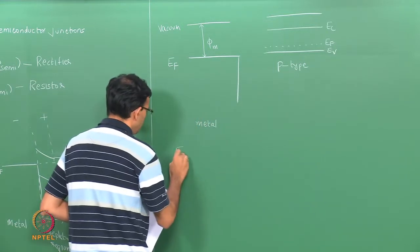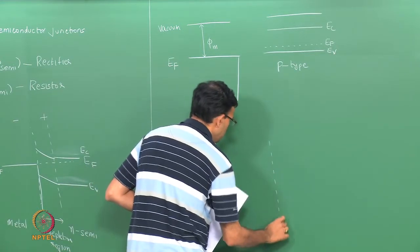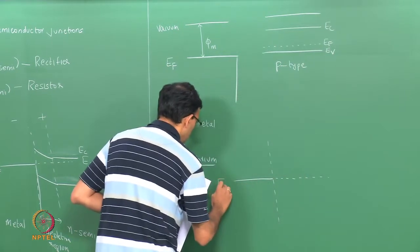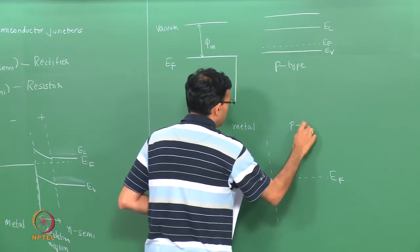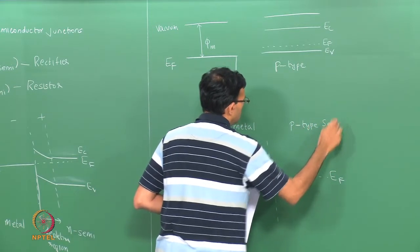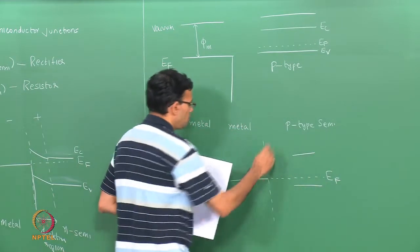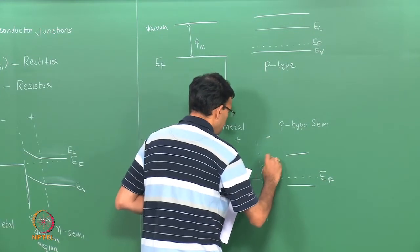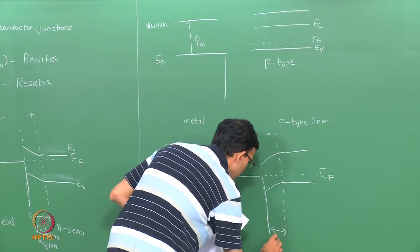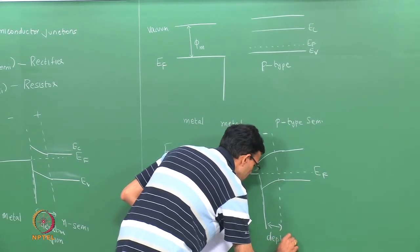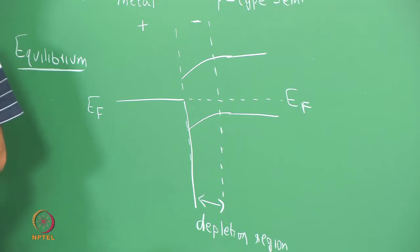Drawing this in equilibrium: the Fermi levels must line up. E_f for both the metal and the p-type semiconductor are aligned. Far away from the junction, your material is still p-type, and then the bands bend down so that there is a net negative charge and a net positive charge, forming the depletion region. The band bending here is similar to that of a metal and an N-type, but it goes the other way.